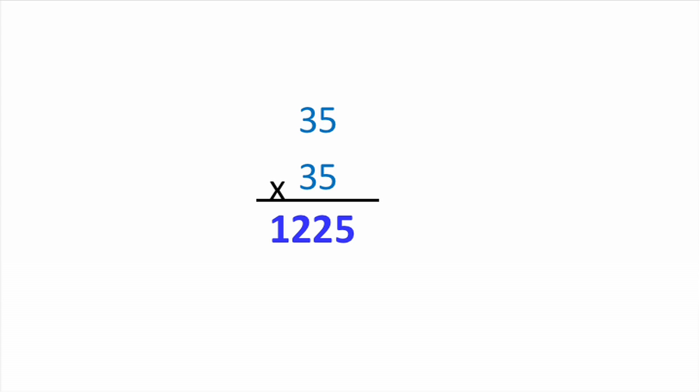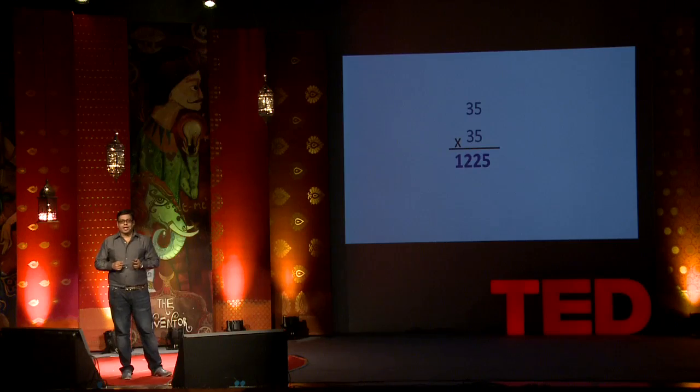Take another sum. Try doing it mentally. 85 square. We got 8. What comes after 8? And 5 square. So you multiply 8 and 9. That gives you? And then 5 square is 25. So 7225.